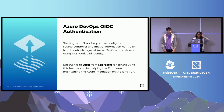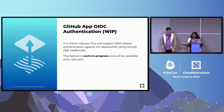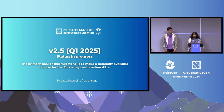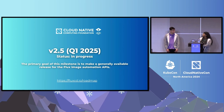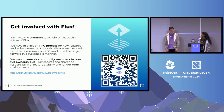We also have Azure DevOps OIDC authentication — a big thanks to Microsoft for helping with this feature. Looking forward to next year: GitHub App OIDC authentication is a work in progress and will be released early next year. The primary goal of V2.5, releasing in Q1, is to make all of the Flux image automation APIs generally available.